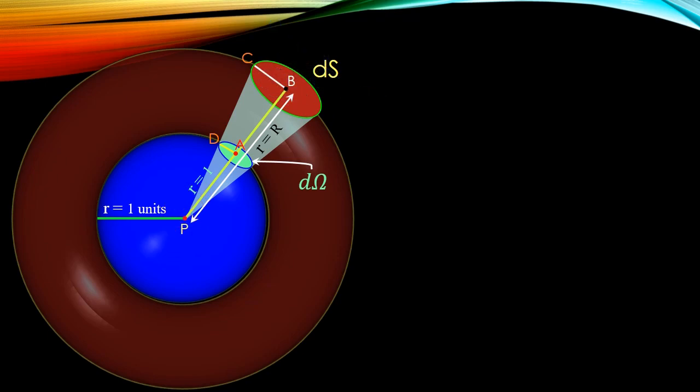Now we can see that line PA has a length of 1 unit and line PB has a length of R units.